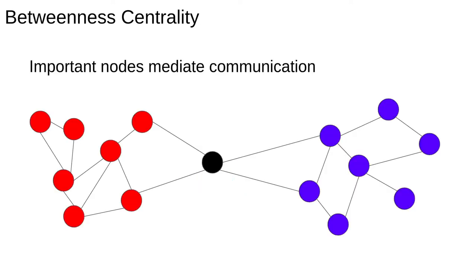Another type of centrality is betweenness centrality. The idea of betweenness centrality is that important nodes mediate communication. Think of a telecommunications network. If every message has to pass through a certain signal tower then that tower is very important and any interference with it would be dangerous.